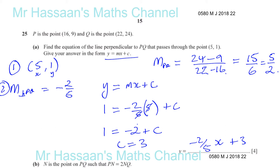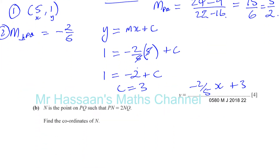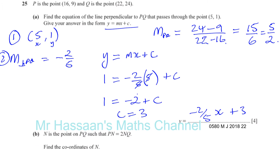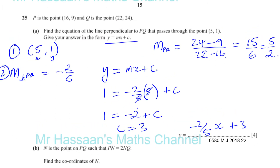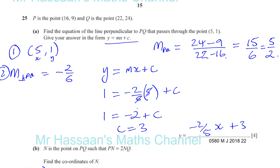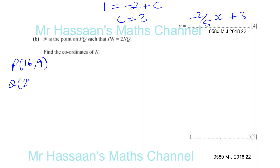Now part B says N is a point on PQ such that PN equals 2NQ. So we have P at (16, 9) and Q at (22, 24), and N lies on PQ where the distance from P to N is twice the length from N to Q.